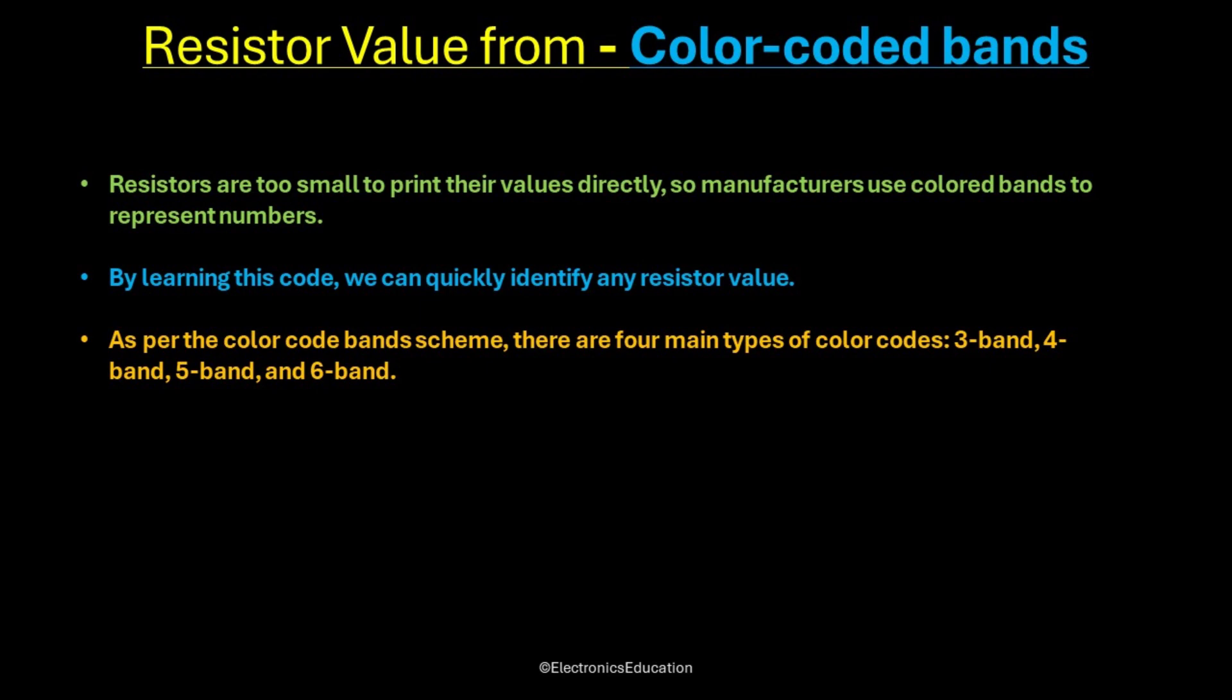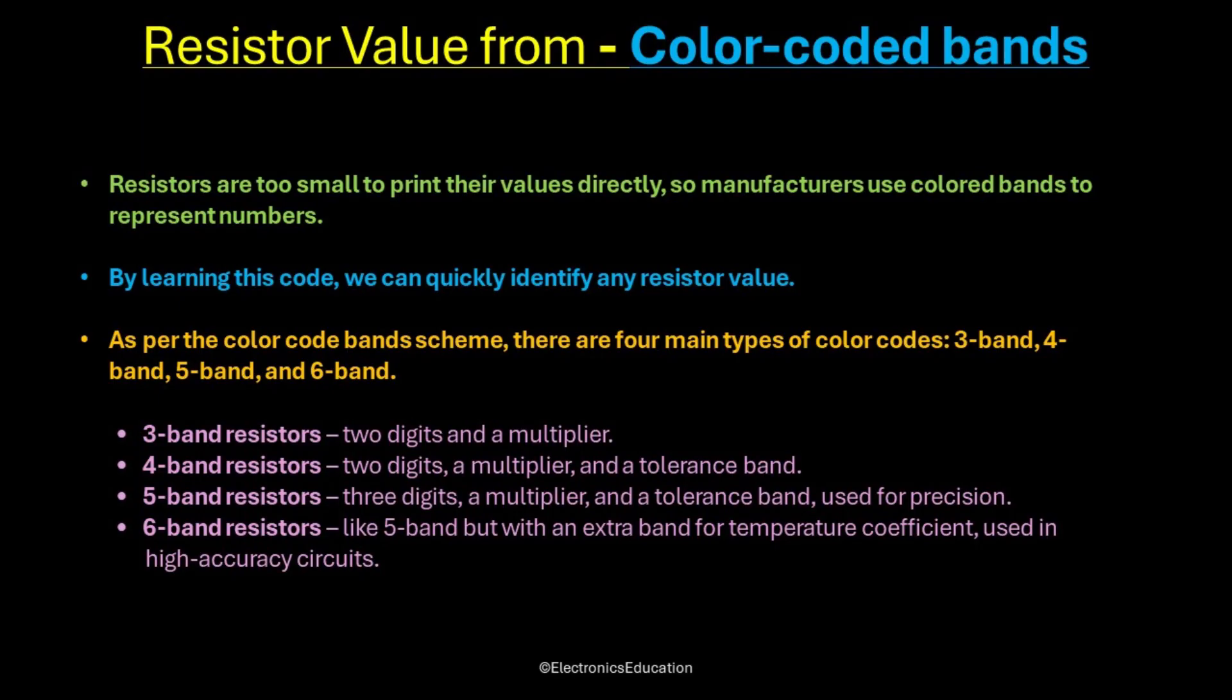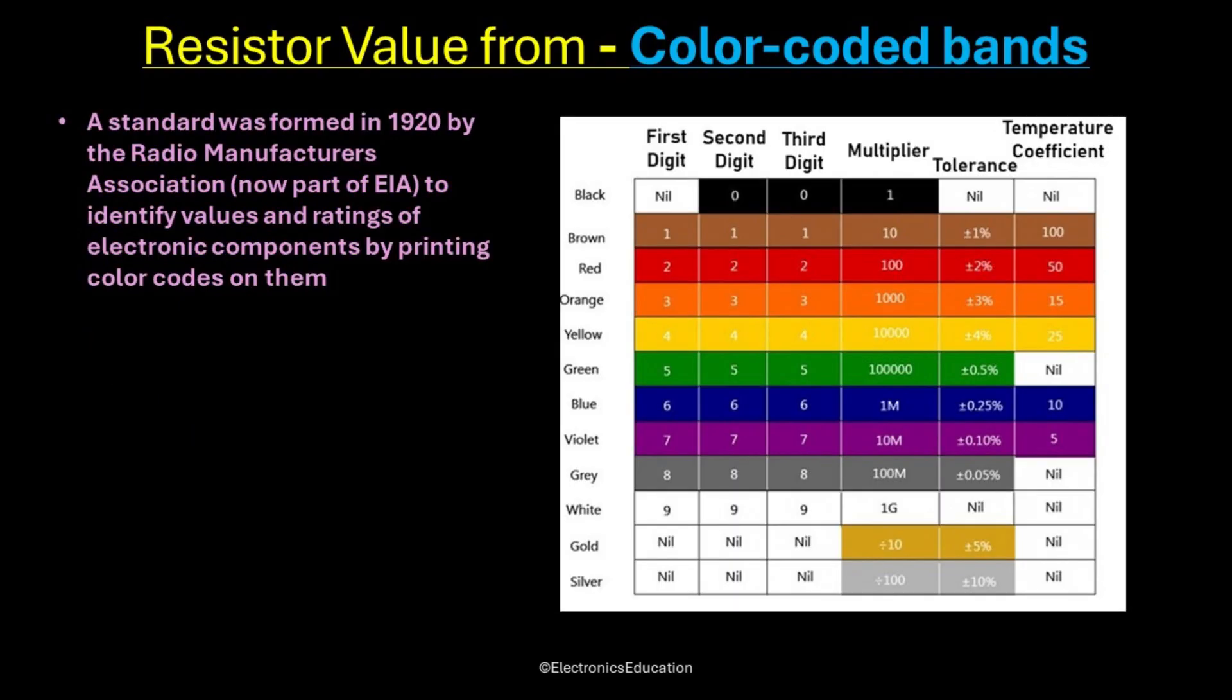As per the color-code band scheme, there are four main types of color codes: 3-band, 4-band, 5-band, and 6-band. For this coding, a standard was formed in 1920 by the Radio Manufacturers Association. This standard identifies values and ratings of electronic components by printing color codes on them.